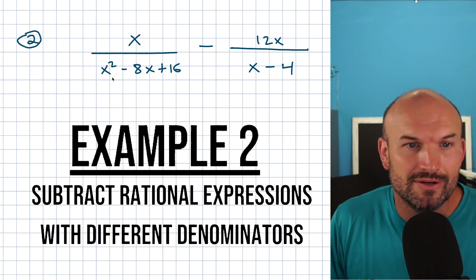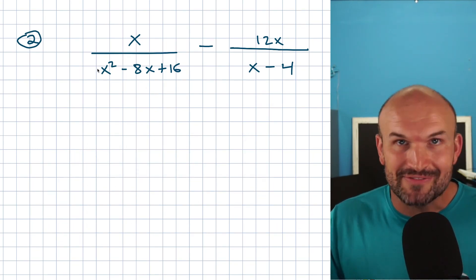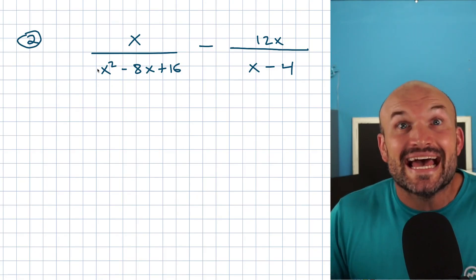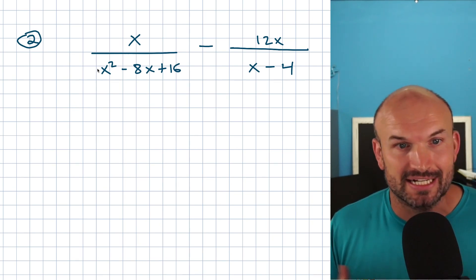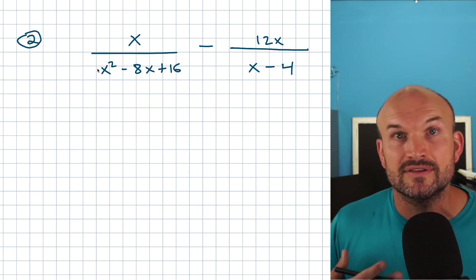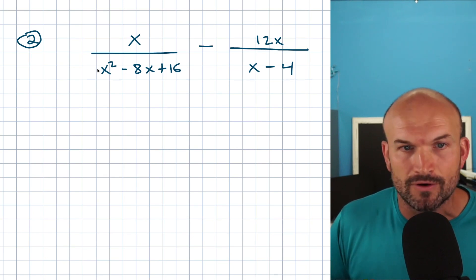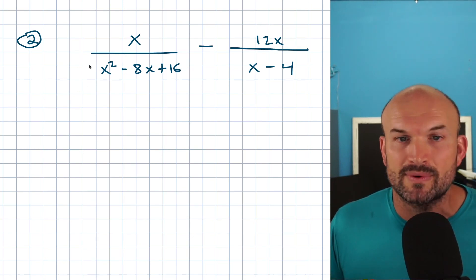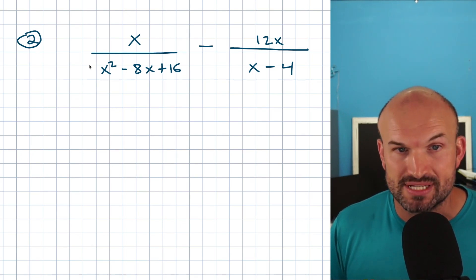In the next example, whenever you see a quadratic trinomial, there should be sirens going off in your head saying factor, factor, factor. It's one of the dead giveaways that when you're trying to simplify or combine an expression and you see a quadratic, always look to see if it is factorable. That's why your familiarity with factoring becomes so helpful. Not all the time will we need to factor, but in problems like this it's especially important.